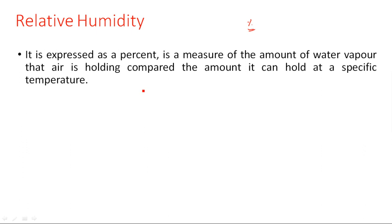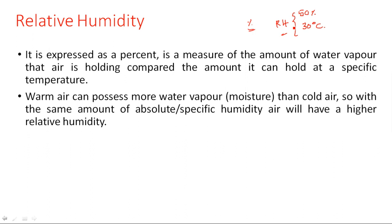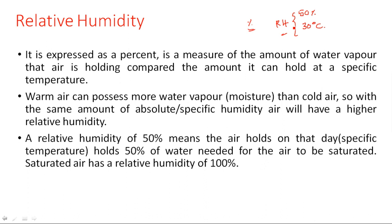Relative humidity is a measure of the amount of water vapor that air is holding compared to the amount it can hold at a specific temperature. A notation like '50% humidity at 30 degrees Celsius' is read as RH — relative humidity. Warm air can possess more water vapor than cold air.